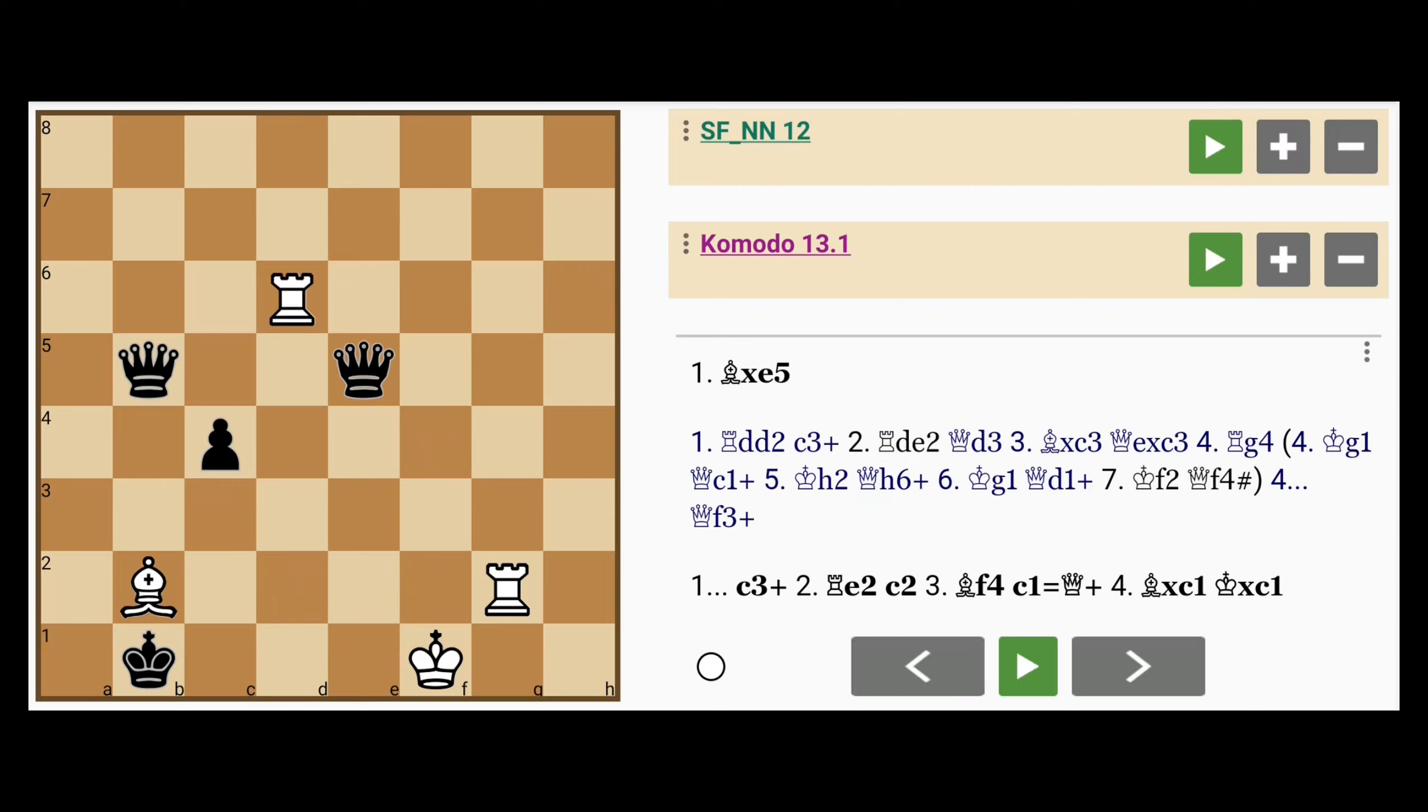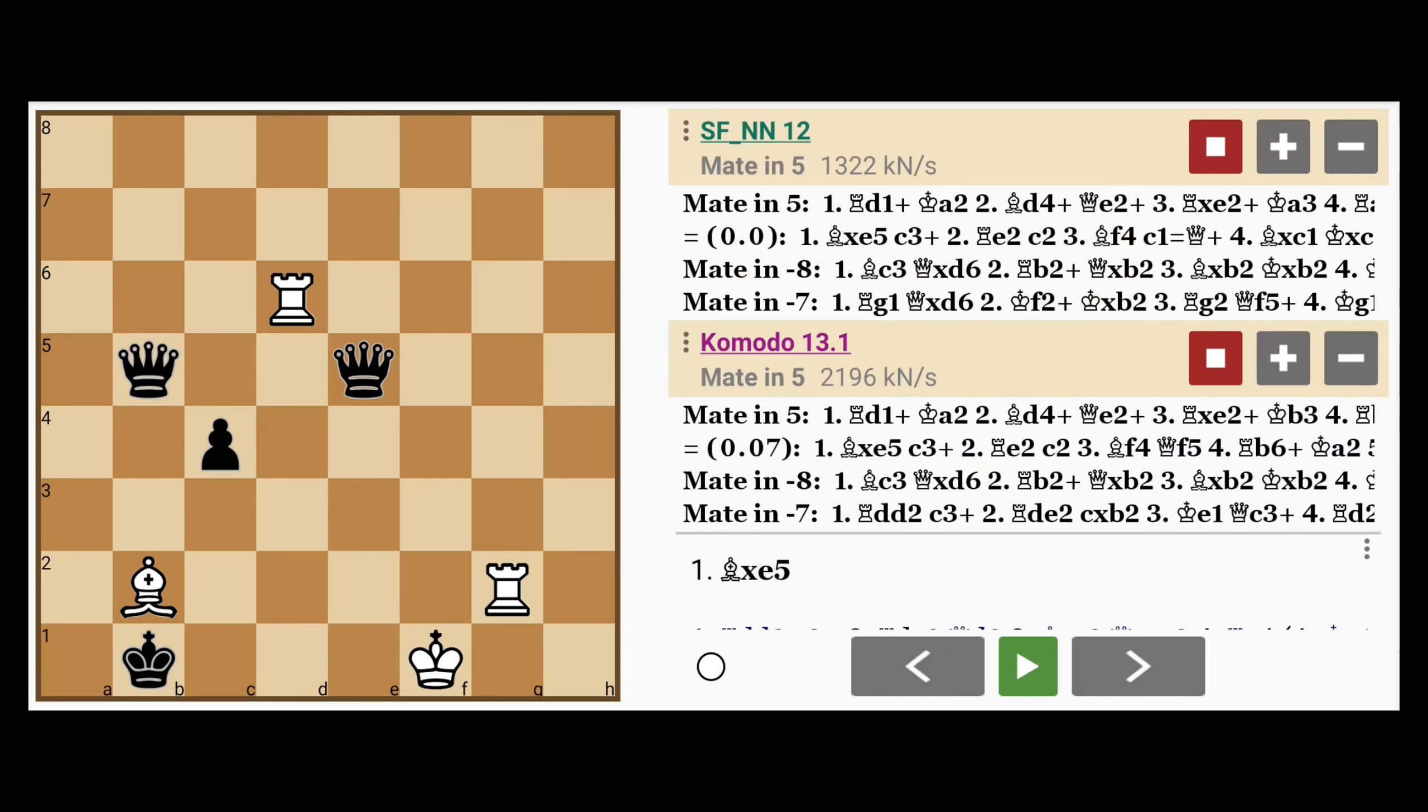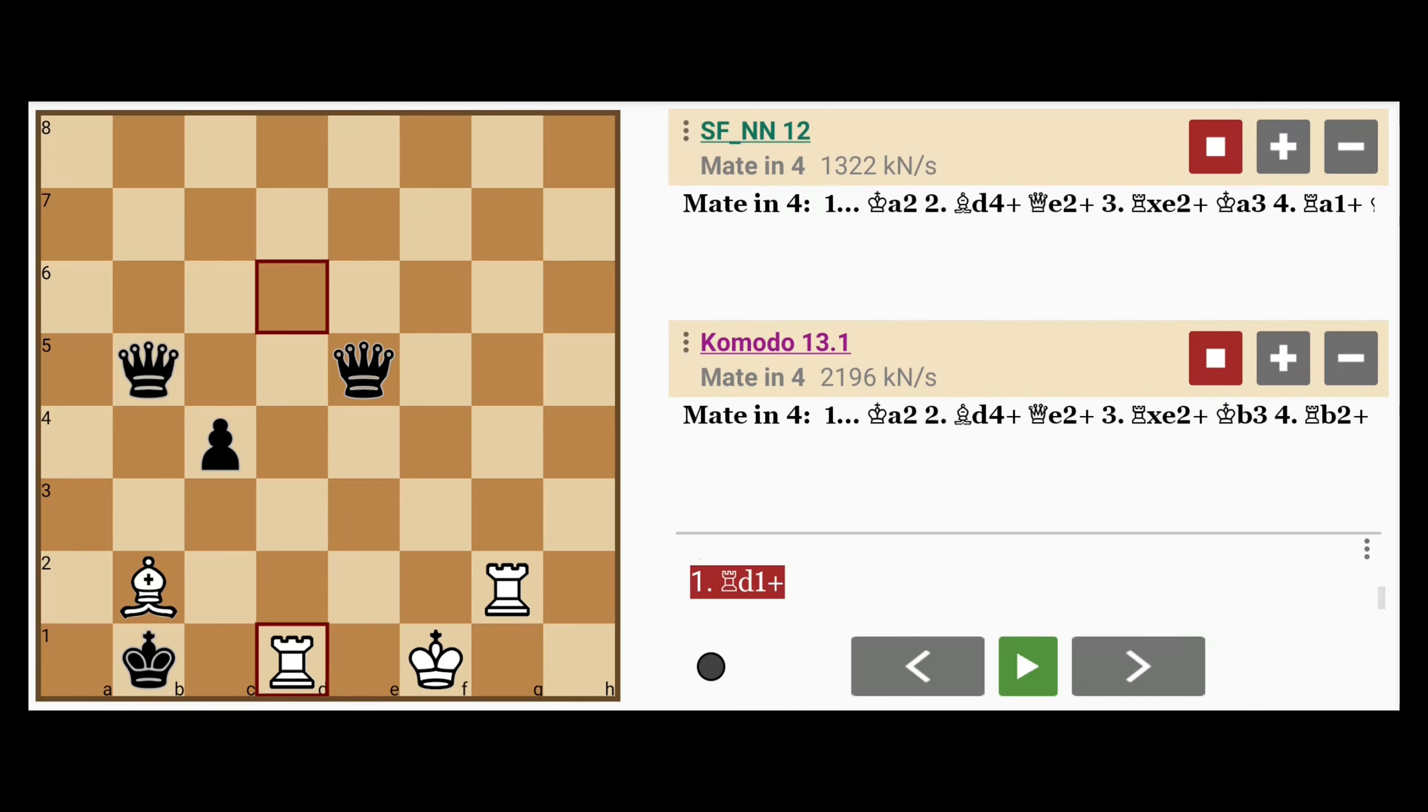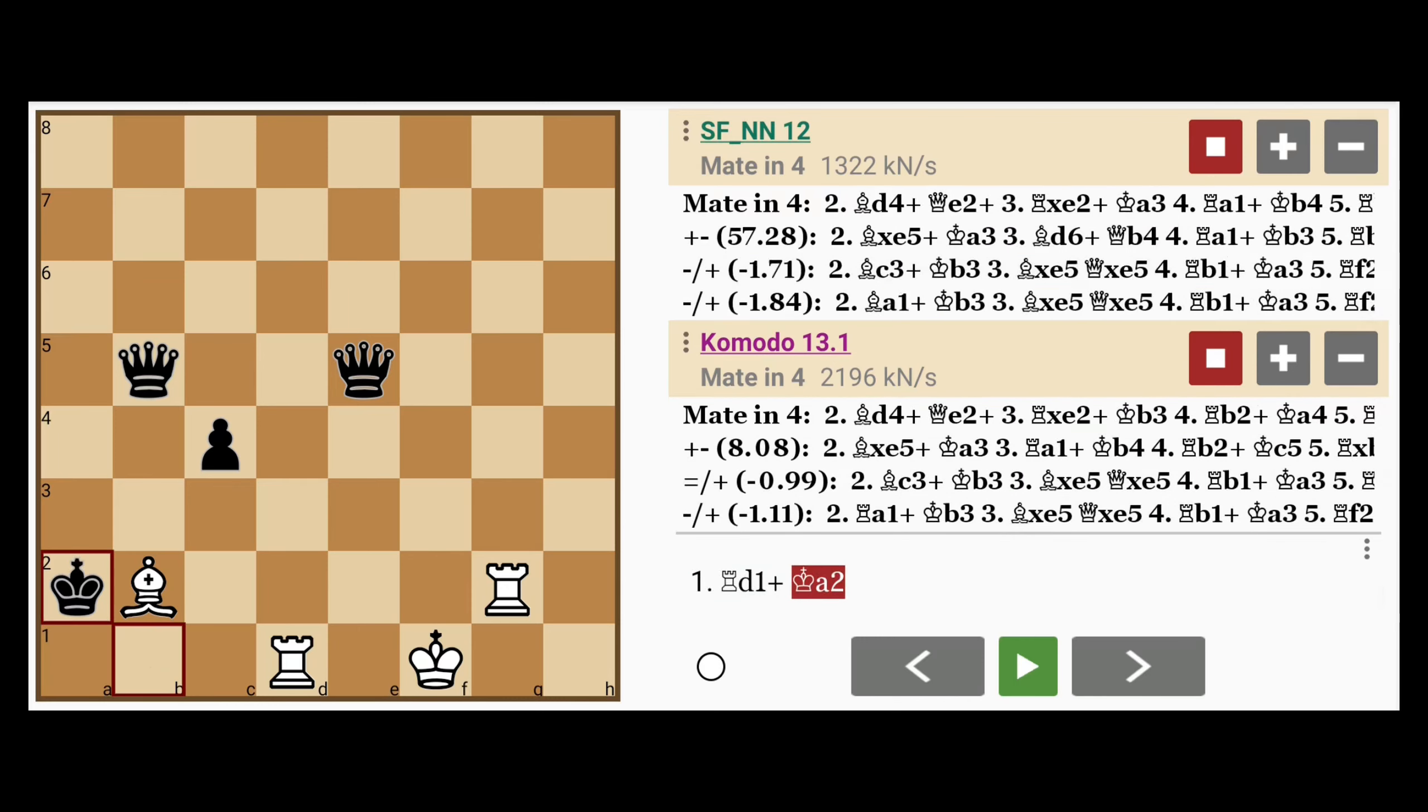So rook dd2 is also a mistake here. Let's look at what the best way to proceed in this position actually is. The answer is rook to d1 check. Now obviously the king can't capture the bishop because it's defended by the other rook, so king to a2 is the only move.